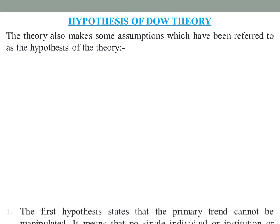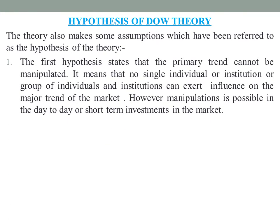The first hypothesis states that the primary trend cannot be manipulated. It means that no single individual or institution, or group of individuals and institutions, can exert influence on the major trend of the market.